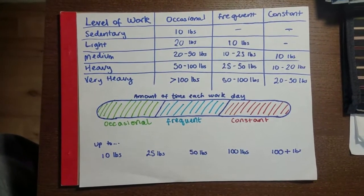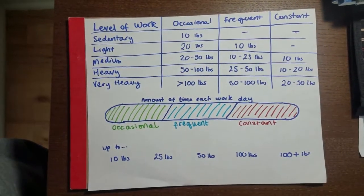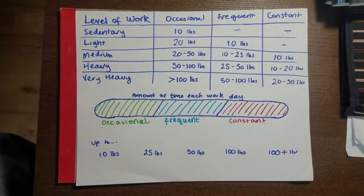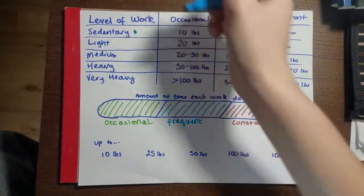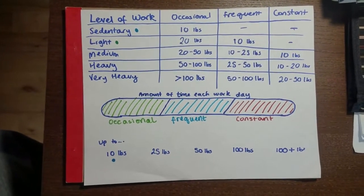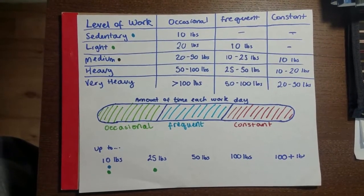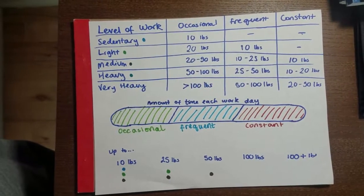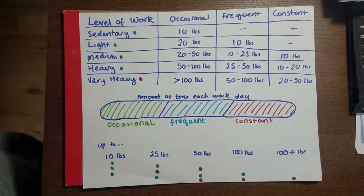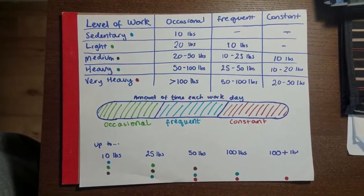Instead of trying to memorize the whole table, what's helpful is to remember these weights, since they correlate closely to each of the categories. With each increasing level of work, you increase the amount of weight. For sedentary work, you lift ten pounds occasionally. For light work, you lift ten pounds frequently and twenty pounds occasionally. For medium work, you lift ten pounds constantly, up to twenty-five pounds frequently, and up to fifty pounds occasionally. For heavy work, you lift up to twenty, fifty, and one hundred pounds respectively. And for very heavy work, it's fifty, one hundred, and over one hundred pounds respectively. Even though this method doesn't include the exact ranges for all categories, it should get you close enough to answer any exam questions on this topic.